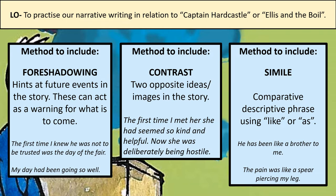The next method is contrast — two opposite ideas or images in the story. For example: 'The first time I met her, she had seemed so kind and helpful. Now she was deliberately being hostile.' You can see the contrast between 'kind and helpful' and 'hostile.' Maybe one person is being treated really kindly while another is being treated very unfairly. Contrast and foreshadowing are both structural techniques. There's also a language technique I'd like you to include — similes: comparative descriptive phrases using 'like' or 'as.' For example: 'He has been like a brother to me,' or 'The pain was like a spear piercing my leg.'